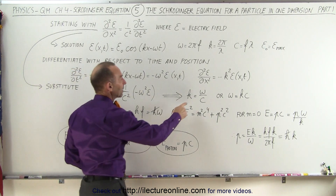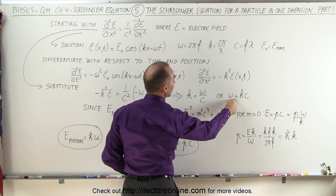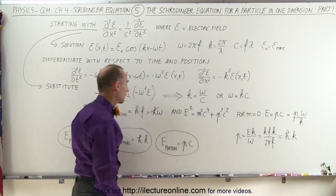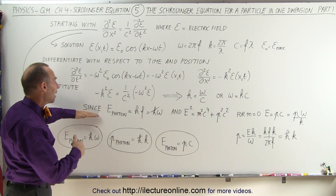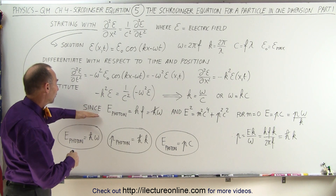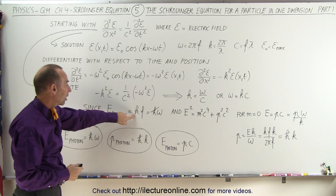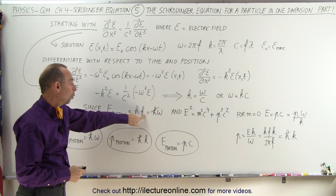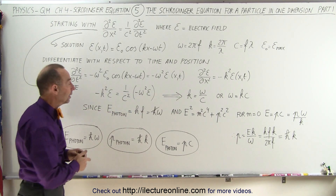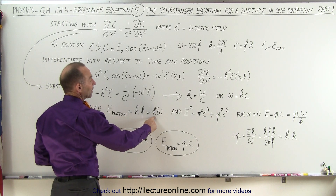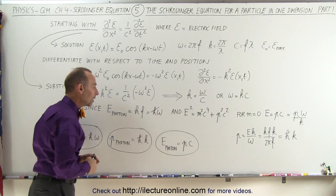So we can say that k equals ω over c, or equivalently ω equals k times c. Now we go back to some other information we have. The energy of a photon can be written as Planck's constant times the frequency, or since frequency is ω divided by 2π, we can write h divided by 2π — which is ℏ — times the angular frequency ω.